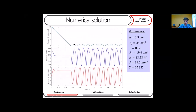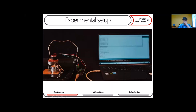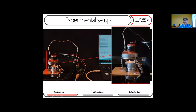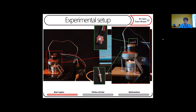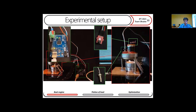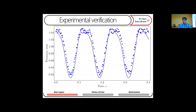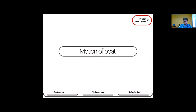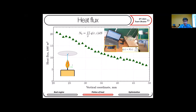We obtain numerical results and observe that the volume of water decreases to an optimal value and after that starts to oscillate around it. To verify this, we built a setup where we fixed our boiler with a special nozzle including a pressure sensor and thermocouple. We take data from it using a microcontroller Arduino. Comparing the numerical simulation with this experimental data, we can observe a good correlation.